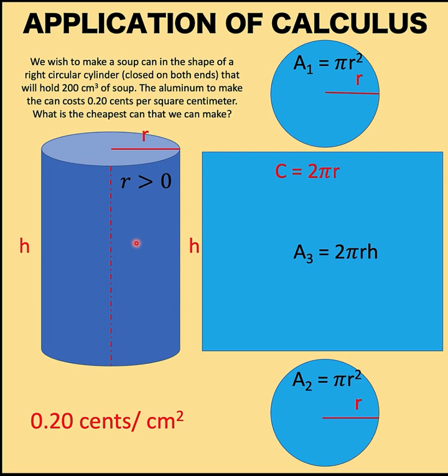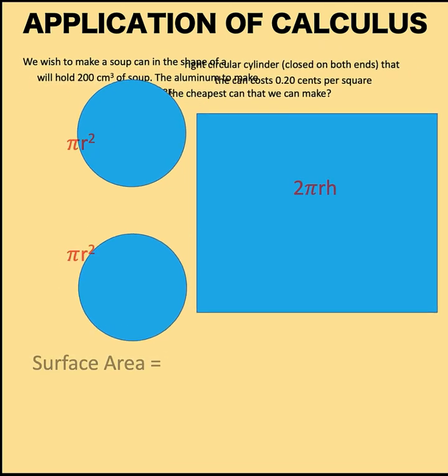According to the problem, each square centimeter of the aluminum material costs 0.20 cents. Our goal is to find the cheapest possible can that we can make. In other words, this is a minimization problem and calculus is good at solving problems like this.